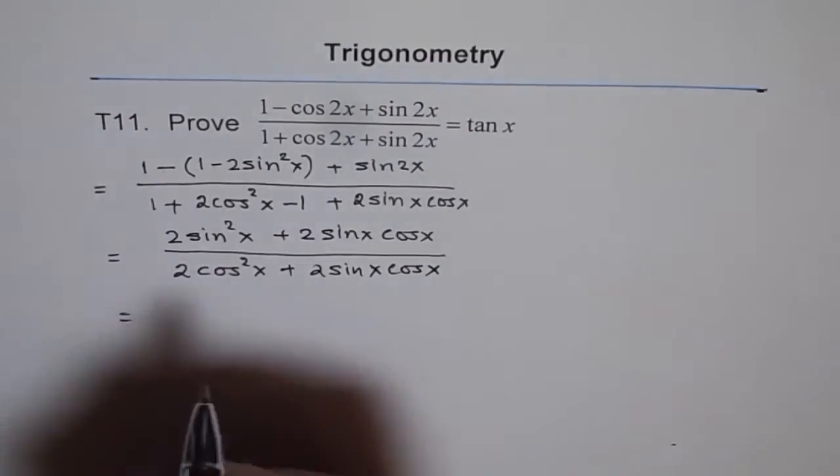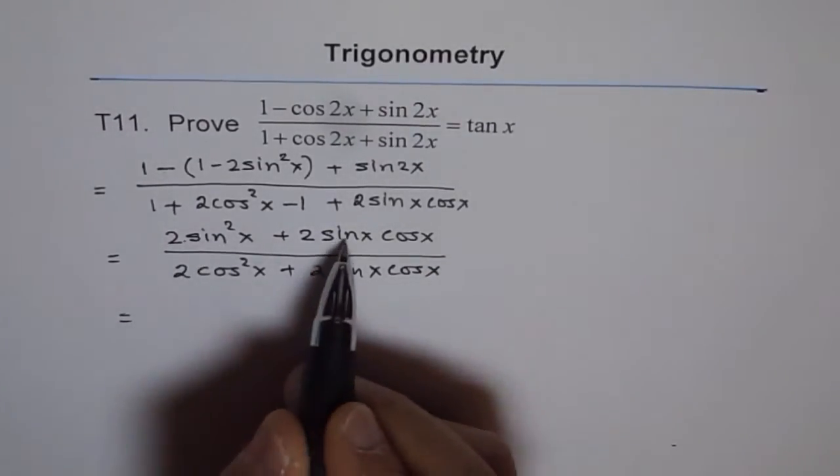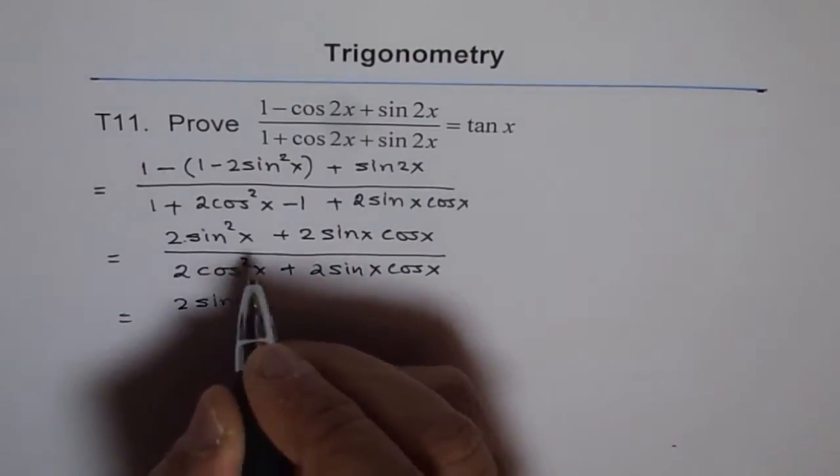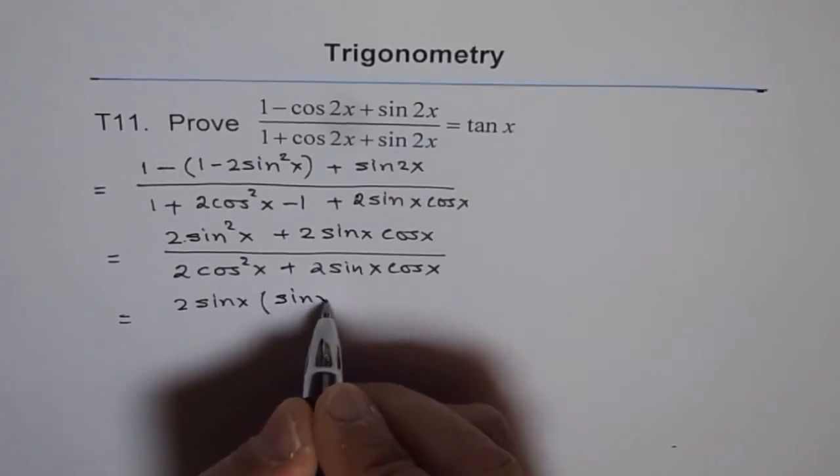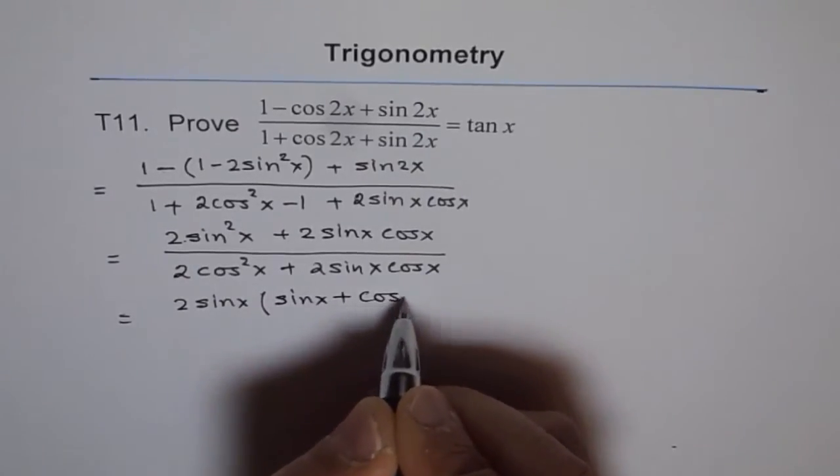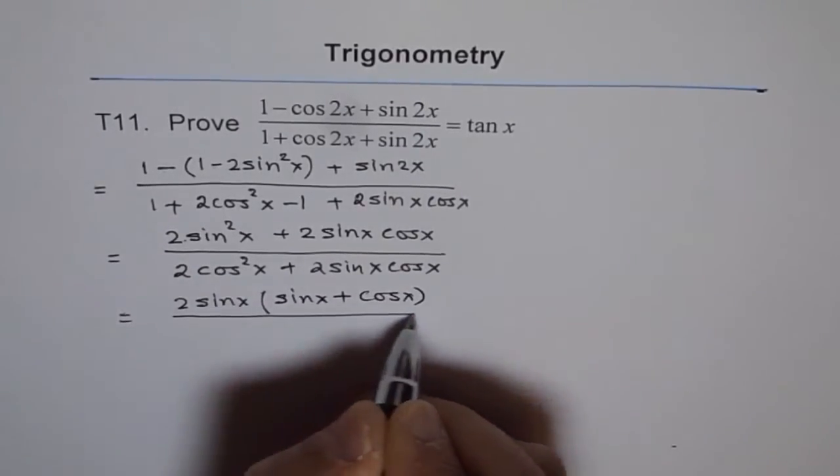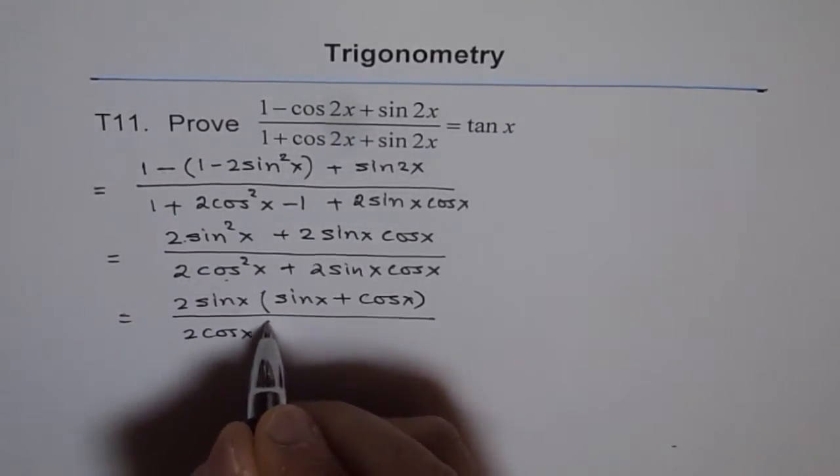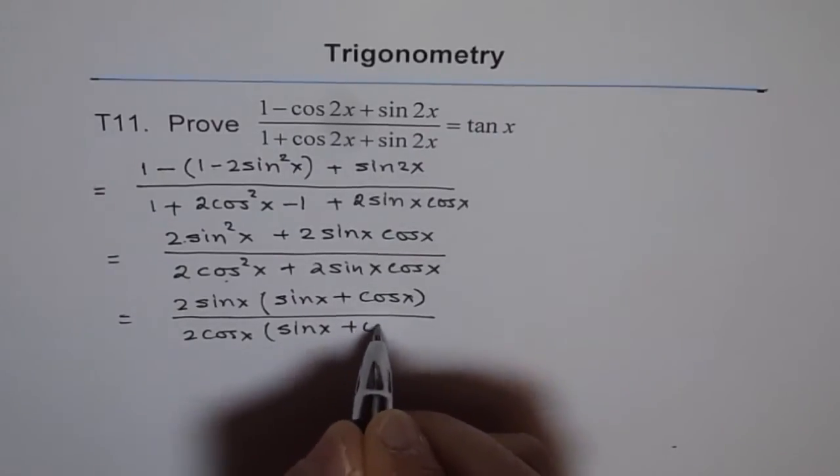And then we can take in the numerator, 2 sin x. So we can take 2 sin x, and we have sin x plus cos x. And in the denominator, we can take 2 cos x. We have sin x plus cos x.